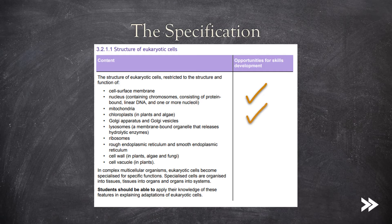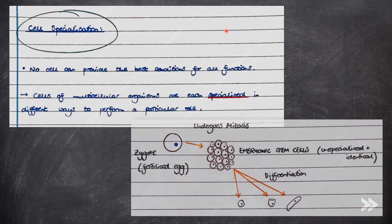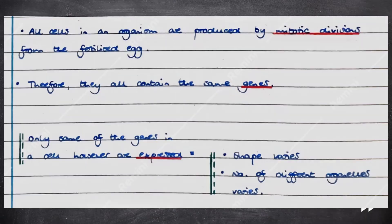Now that we've looked at all of our main organelles found in eukaryotic cells, we just need to have a look at cell specialisation. No cell can provide the best conditions for all functions. Therefore, cells of multicellular organisms are each specialised in different ways to perform a particular role. The zygote — the fertilised egg — undergoes mitosis to form embryonic stem cells, which are each unspecialised and identical. These then undergo differentiation to become all the different cells within an organism. All cells contain the same genes, but only some are expressed, so the shape and number of different organelles varies.